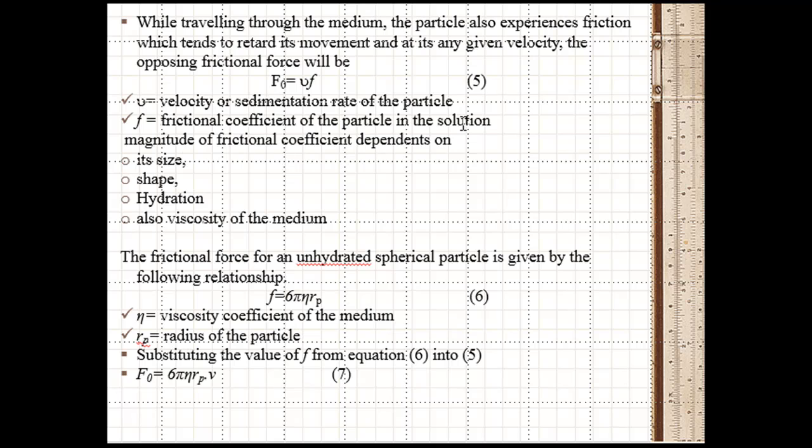The magnitude of frictional coefficient depends upon size, shape, hydration and viscosity of the medium. The frictional force for an unhydrated spherical particle is given by F = 6πηRₚ, where η is viscosity coefficient of the medium and Rₚ is the radius of the particle. Substituting the value of F from equation 6 into 5, F₀ = 6πηRₚV.